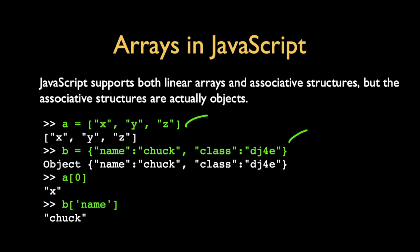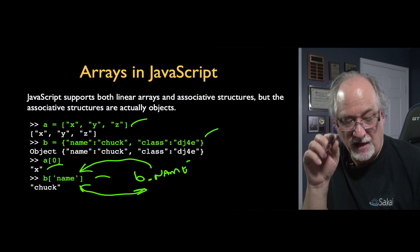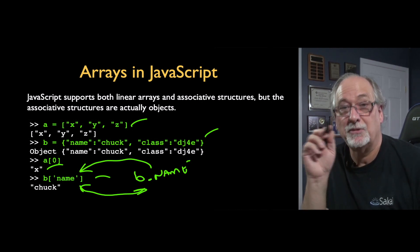Now you can say a sub zero, which gives you x, which is that first element. And you can say b sub quote name quote. You can do that. Another way to say that is b dot name. Those two syntaxes, and this confused the heck out of me when I was first learning JavaScript, those two syntaxes mean the same thing. They both are saying look up an attribute of the object b that's named name.